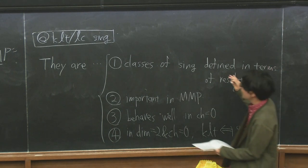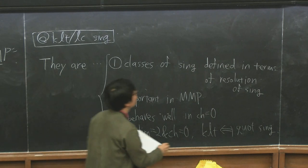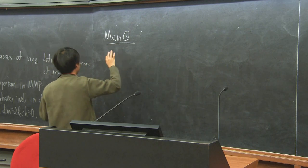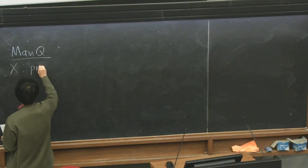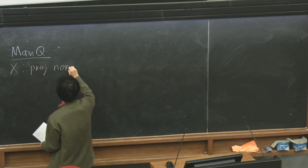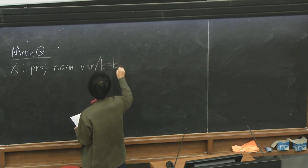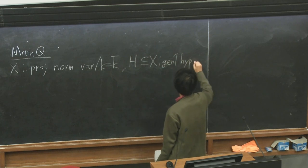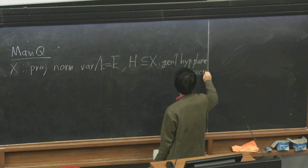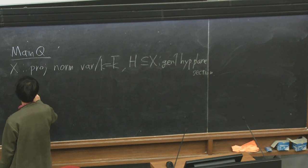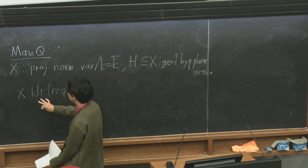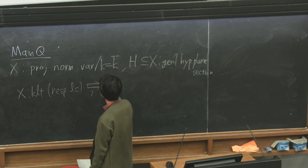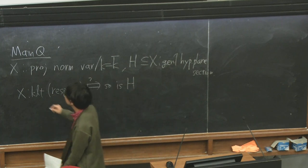The main question is: let X be a projective normal variety over an algebraically closed field, and let H be a general hyperplane section. If X is KLT — that is, X has only KLT singularities — or X has only log canonical singularities, then is the same true for H? This is the main question today.